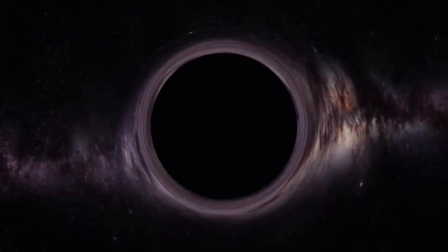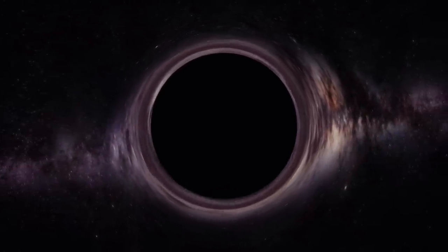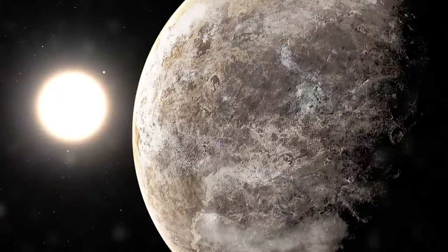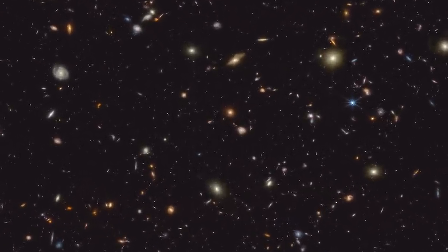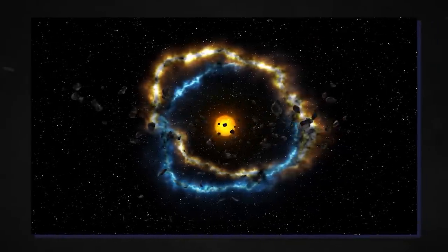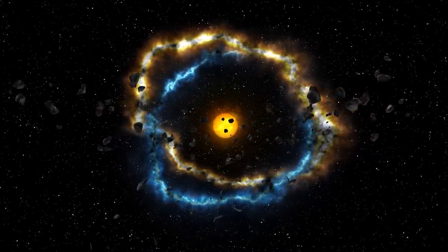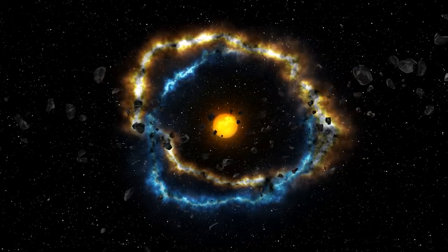The black hole nearest to Earth, affectionately called the Unicorn, is located around 1,500 light-years away. This black hole got its name for two reasons. Firstly, it resides in the constellation Monoceros. And secondly, it's an extremely rare find because it has a surprisingly low mass, about three times that of the Sun.